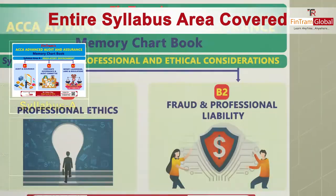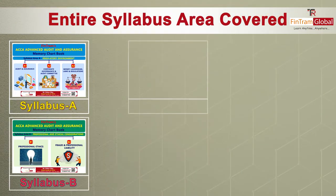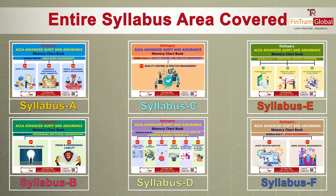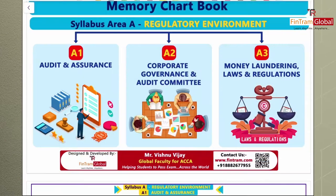We will be covering the entire syllabus of AAA throughout these memory chart books, and we will be looking at each and every key examinable topic of each syllabus area, starting from Syllabus Area A — the regulatory environment. We will look at the basics of audit and assurance, then move on to corporate governance, audit company related topics, as well as money laundering laws and regulations.